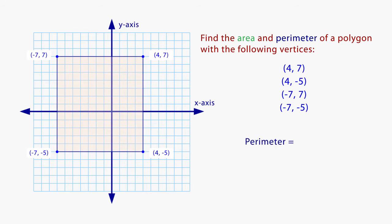To find the perimeter, we count the units around the rectangle. Let's start at the top left corner. The perimeter is 46 units.